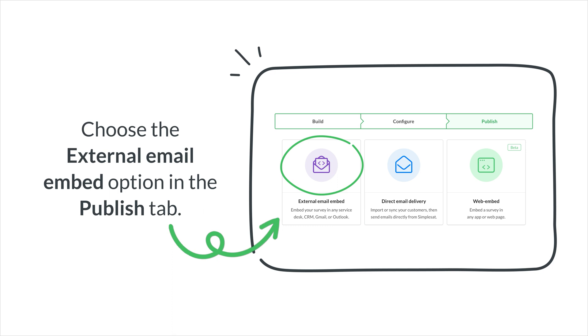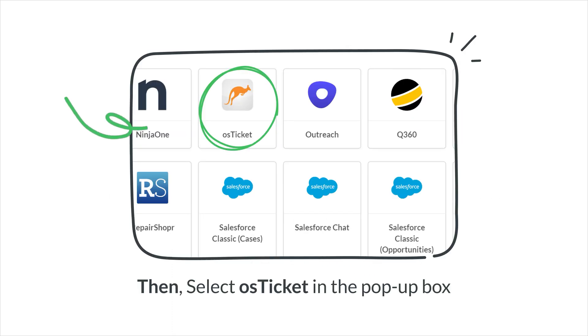Create a new survey and modify the survey settings according to your preferences. Select External Email Embed from the Publish section, then select OS Ticket.